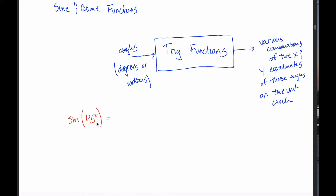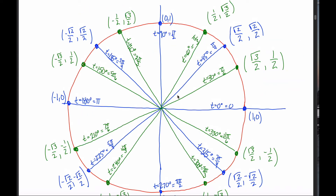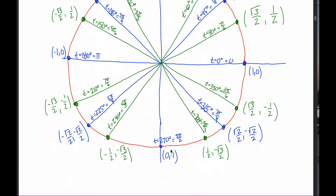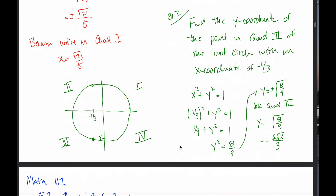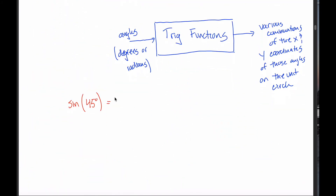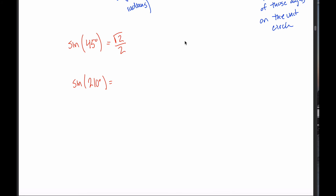So a question might look like this: the sine of 45 degrees. I'm putting an angle into that function, and what should come out is the y-coordinate — because sine will always correspond with y — of the point on the unit circle that terminates at 45 degrees. Coming back to the unit circle, it's the point that terminates at 45 degrees, and its y-coordinate is square root of 2 over 2. Therefore, the sine of 45 degrees is just the square root of 2 over 2.